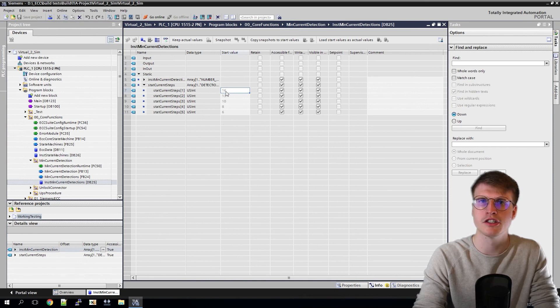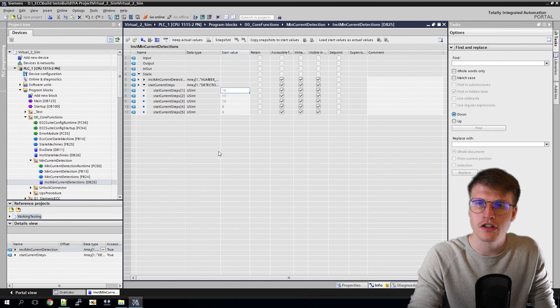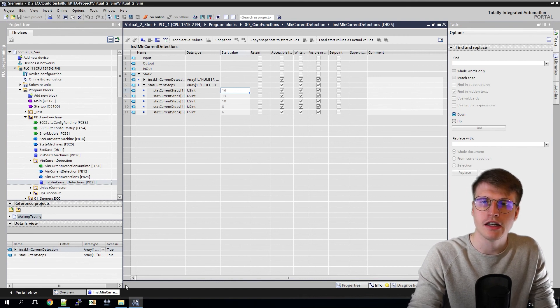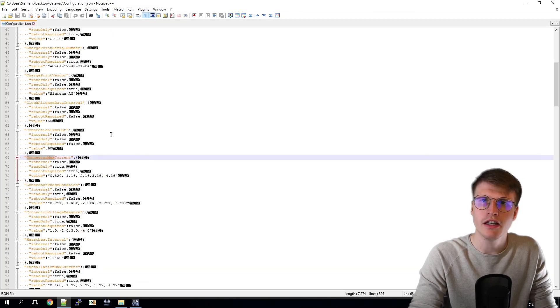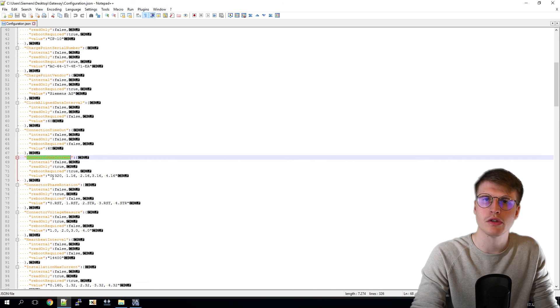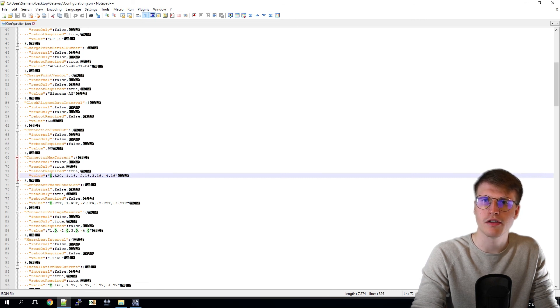Now I can set the values for the load management. To do this, I have to go back to my configuration JSON. Here I now have two values that are important for load management. On the one hand, there is the connector max current. The logical limit for the station and for the connectors is entered here. In this case, zero always means that this is the value for the station. So my station now has 320 amps available and each connector is logically allocated 16 amps.